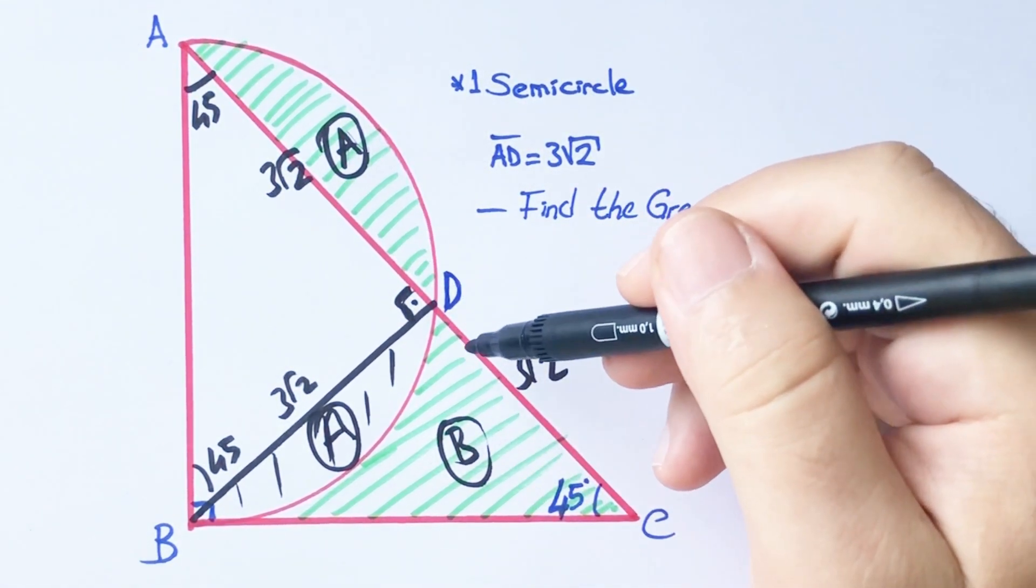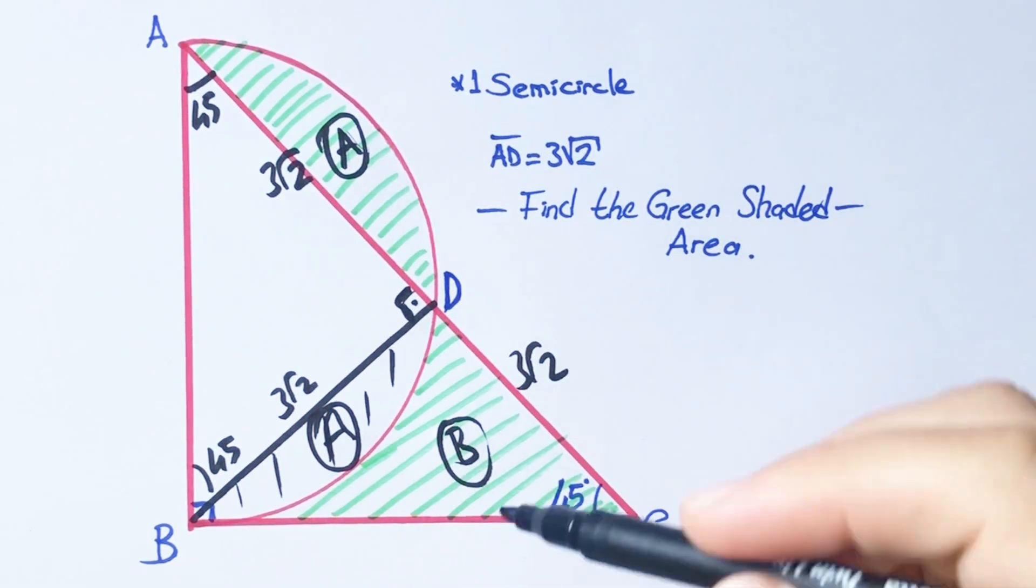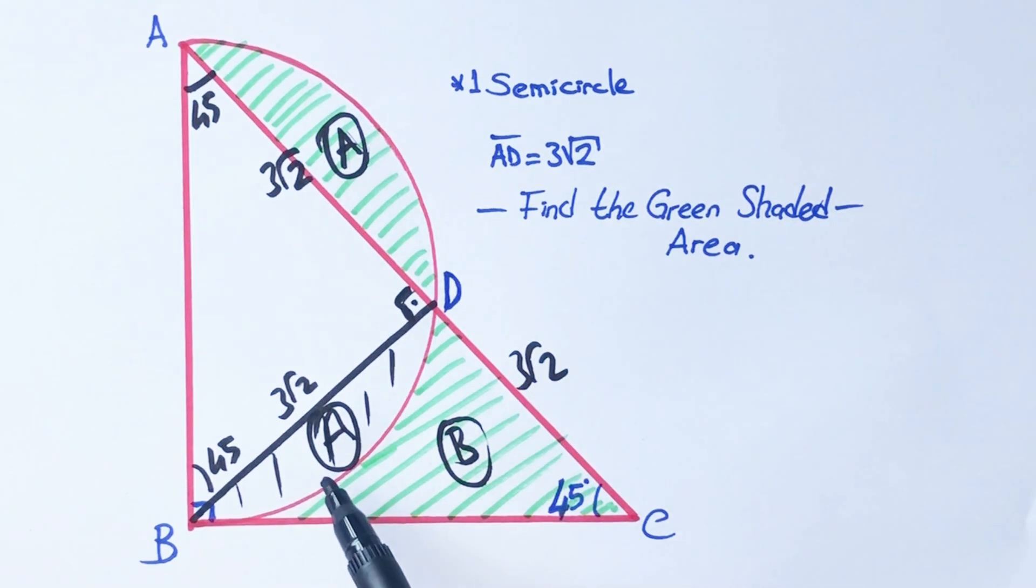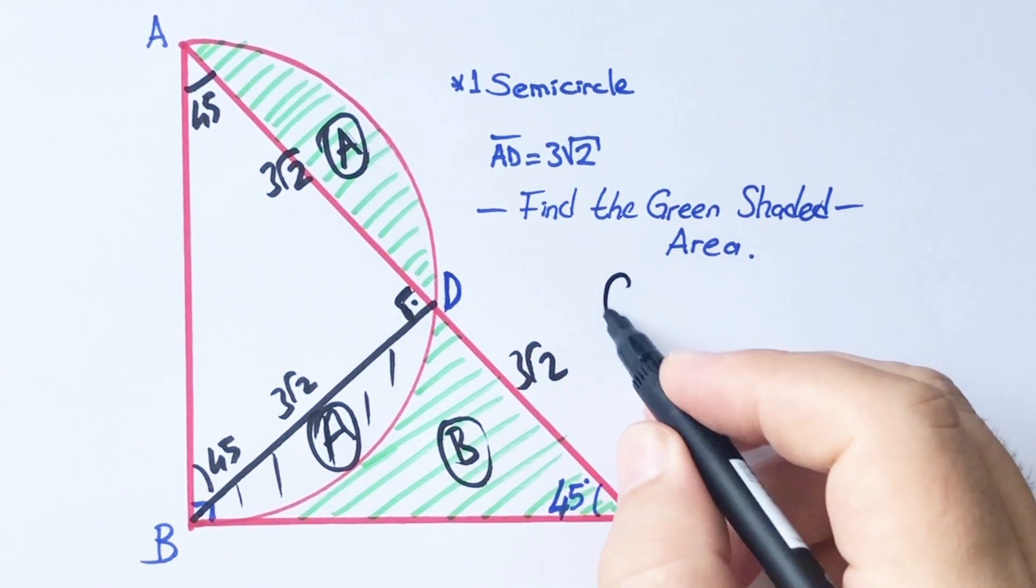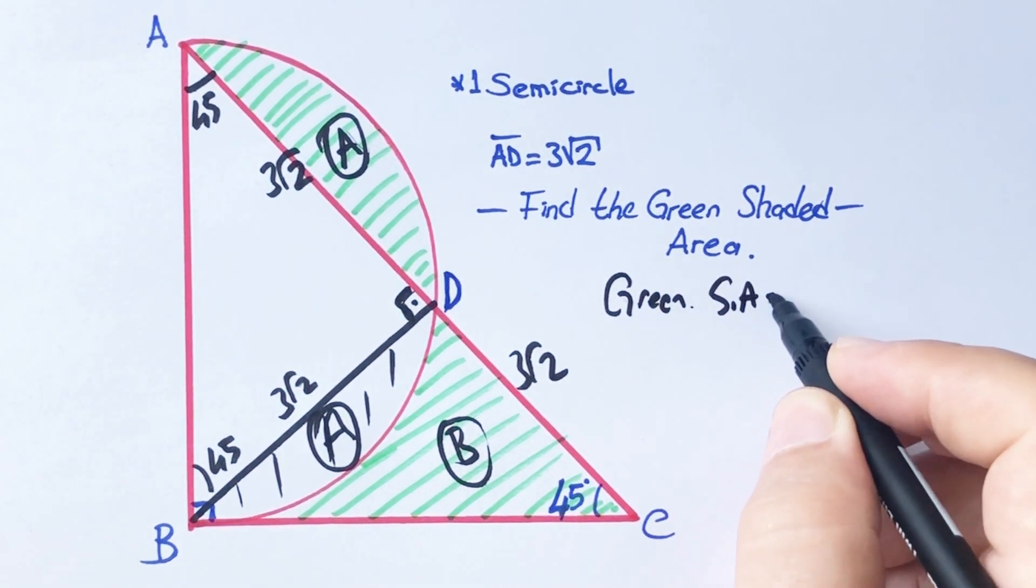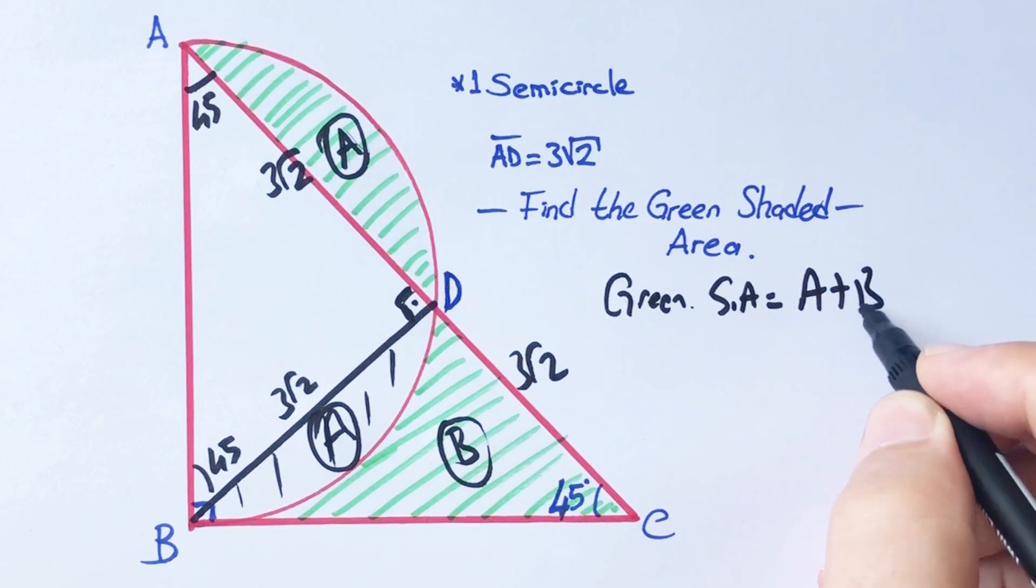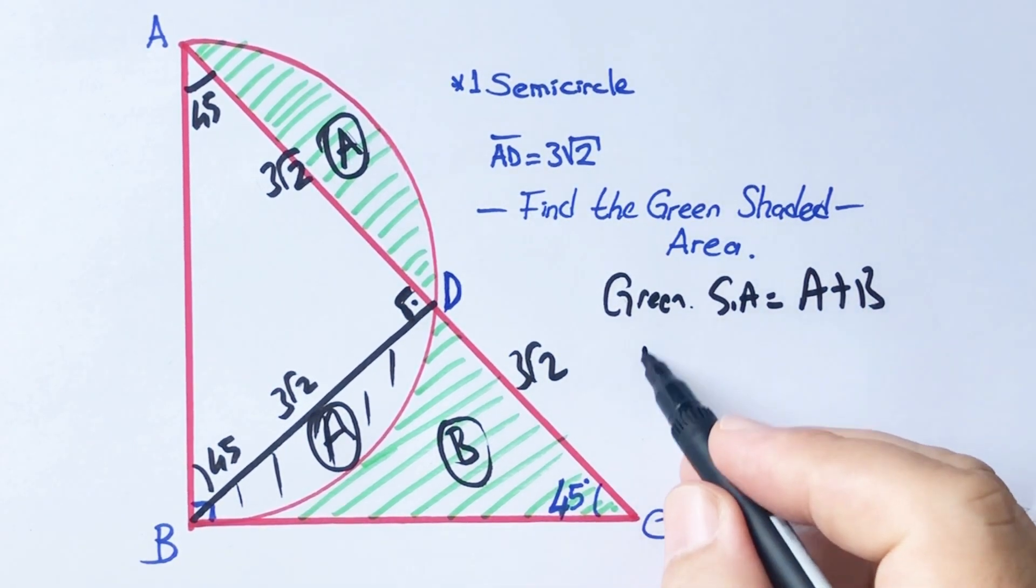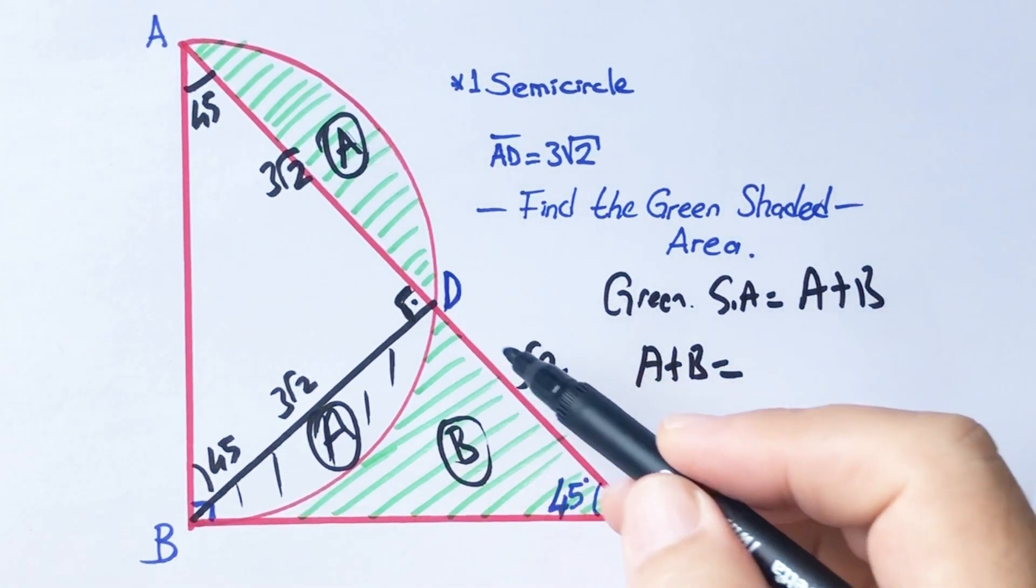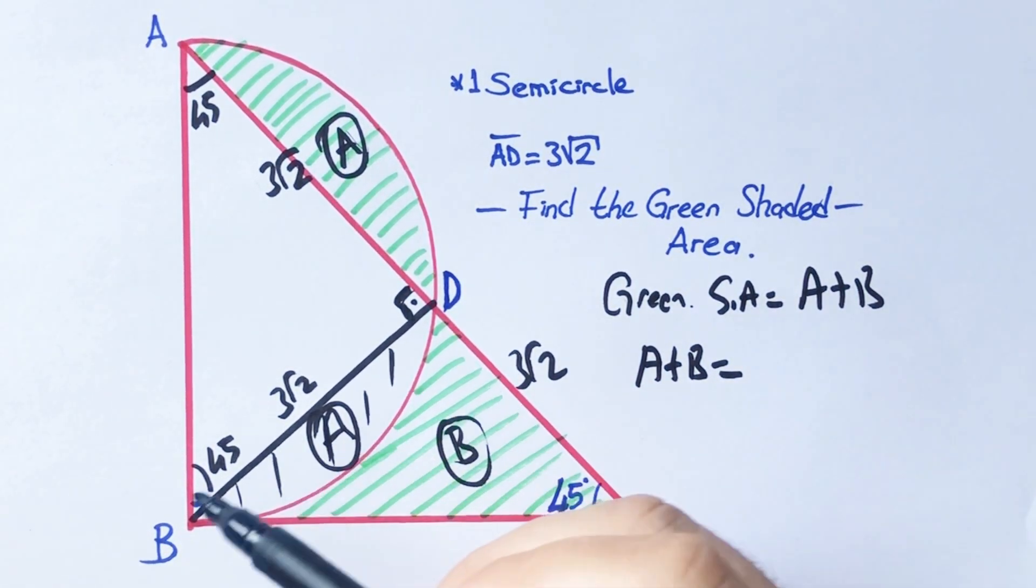Therefore, the sum of the green shaded area must equal A plus B. Green shaded area equals A plus B, which equals this isosceles right triangle area here, right?